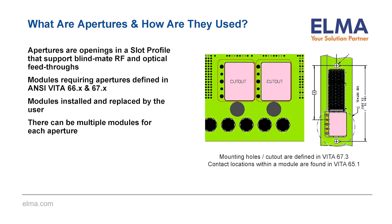Apertures are openings in VPX backplane slots that enable the use of blind-mate coaxial and optical connector modules. Likewise, plug-in modules have gaps in their backplane connectors to accommodate coaxial and optical connectors matching the backplane. The connector modules requiring apertures are defined in the various Vita 66 and 67 standards, and the type of aperture is defined within the individual Vita 65.0 slot profile. The importance of these backplane connector modules is that they can be defined according to a system's mission and installed and replaced by the end-user. The different backplane apertures defined by the standards and their slot profiles can support connector modules with different arrangements of coaxial and optical connectors for each aperture size.